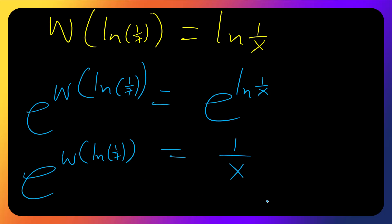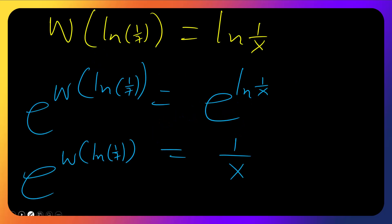The final answer: x will be 1 over e raised to W of ln of 1 over 7. That is that.